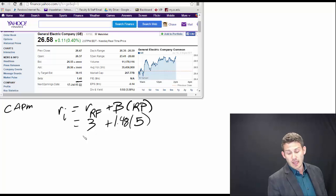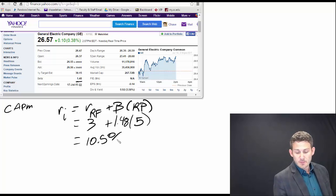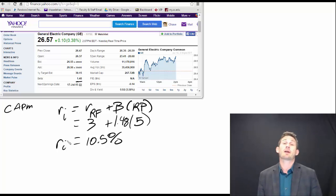So that's gonna show us we're gonna have approximately a 10.5% required return on General Electric.